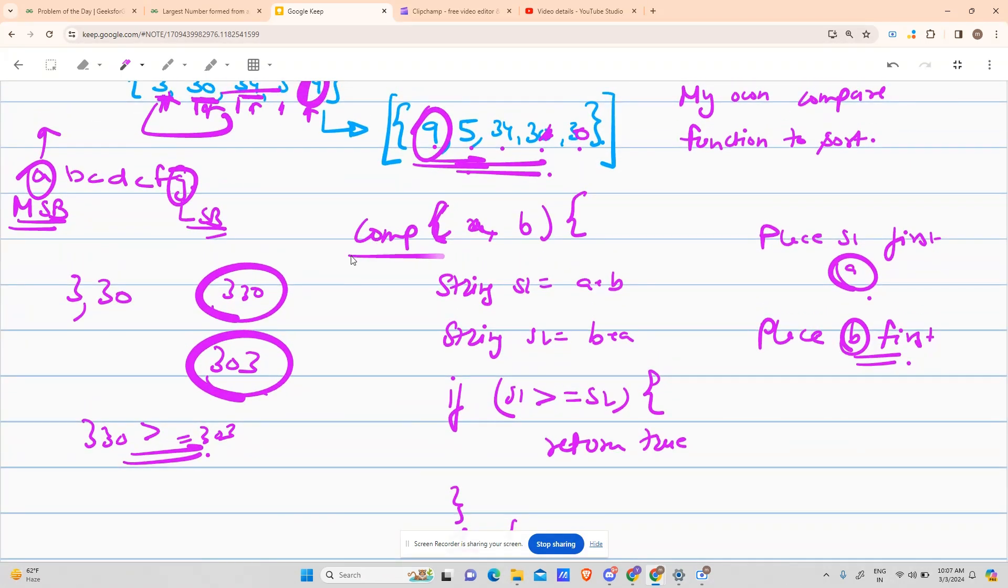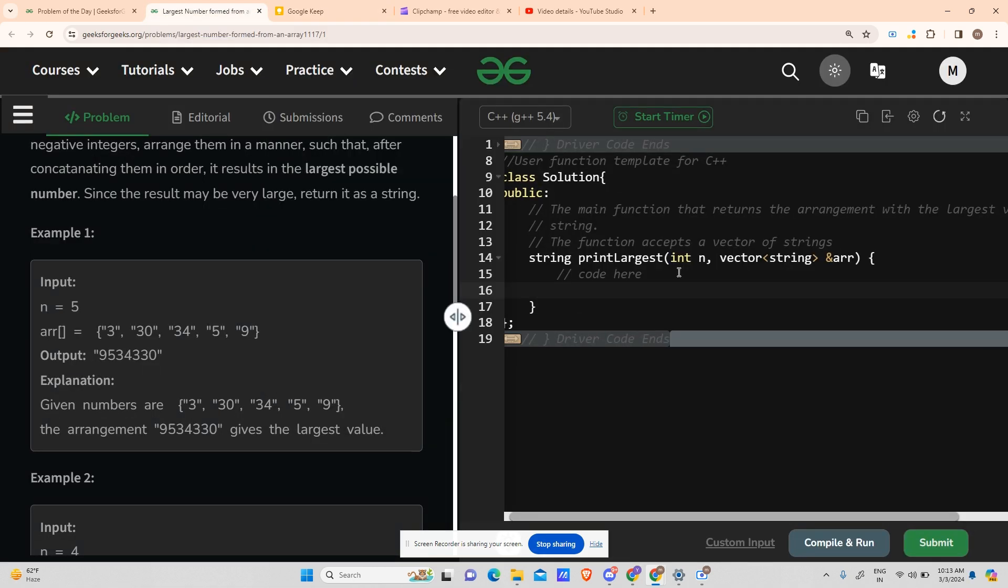After using this compare function to sort, I will get this array, and then I will just concatenate to get my answer. I hope it is clear with you. Now, what is the time complexity for solving? We know to sort a function, we need just O(N log N) time. So this will be my approach. Let's see how it is done in the code.